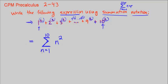So here, I'm starting at N is equal to 1, stopping at N is equal to 10, and I'm squaring it every time and adding those together. So let me box my answer. And this is the end of CPM Precalculus, Chapter 2, Number 43.